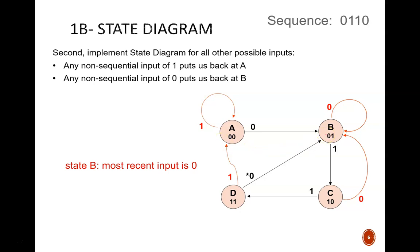Why does this arrow not go to B? Because state B means that the most recent input was 0. Clearly, this arrow tells us that the most recent input was not 0.